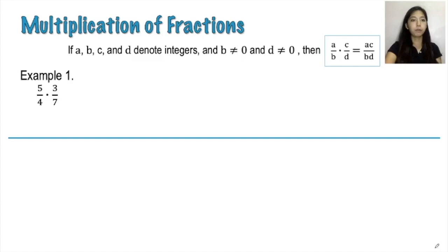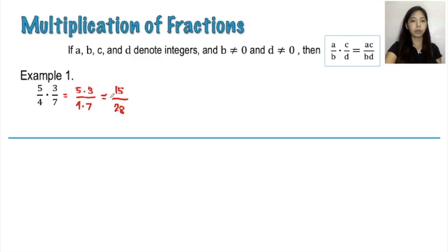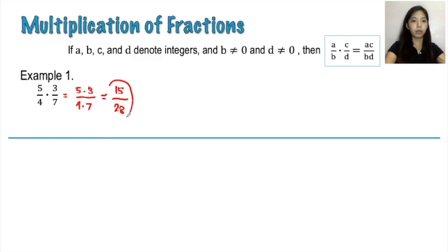Let's have the first example: 5 over 4 times 3 over 7. For this one, you just have to simply multiply the numerator 5 by the numerator 3, over multiply the denominator 4 by the denominator 7. So therefore, for the numerator, 5 times 3 gives us 15, and denominator 4 times 7 gives us 28. After which, check if the given fraction is already in its lowest term. And yes, it is. So therefore, 15 over 28 is already the final answer for the first example.